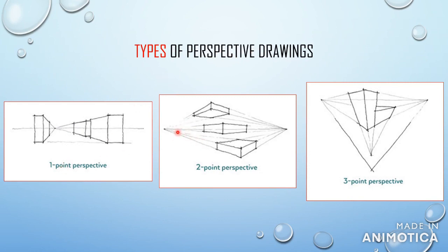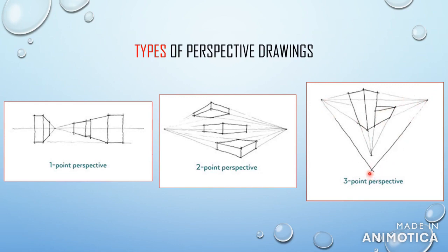You also have two-point perspective, which has two vanishing points — one on the left side and one on the right side. The objects get smaller going toward each vanishing point. Compared to one-point perspective where everything goes toward one point, in two-point perspective the two sides of the objects go in different directions. In three-point perspective, you have three vanishing points — two on each side and one below — giving a different look to the 3D drawing.